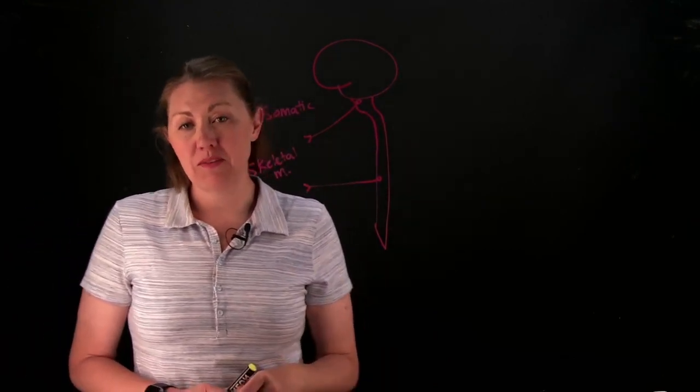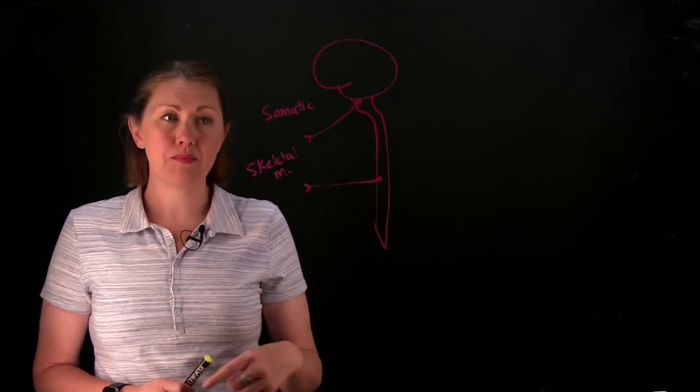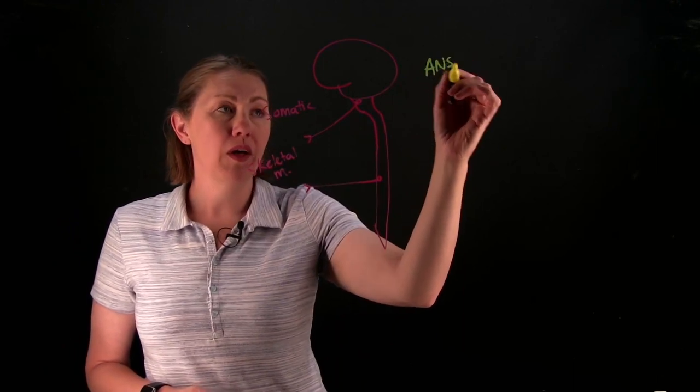Autonomic nervous system, however, does a relay and it goes to different targets. So if we look at the autonomic nervous system, the ANS, we'll have two divisions. Let's do parasympathetic first.